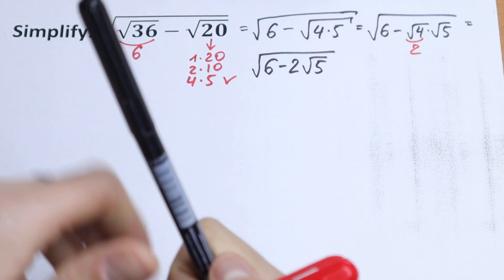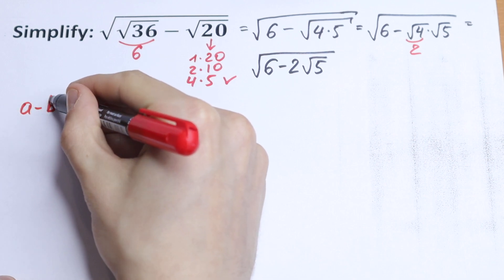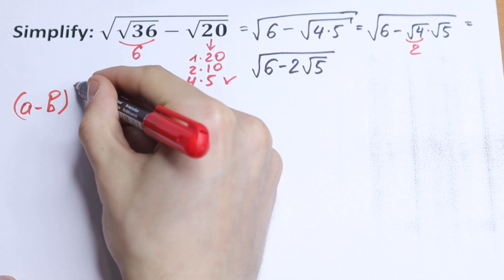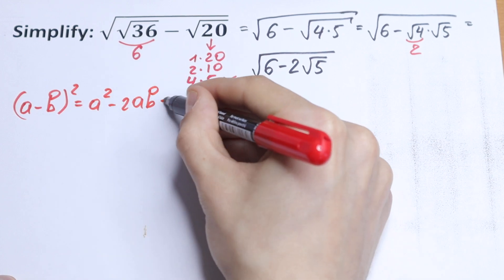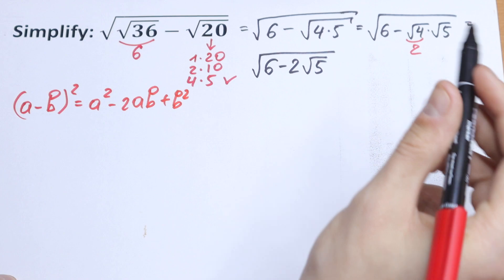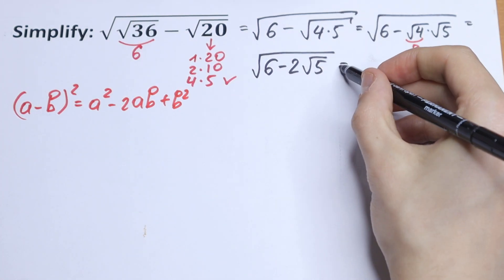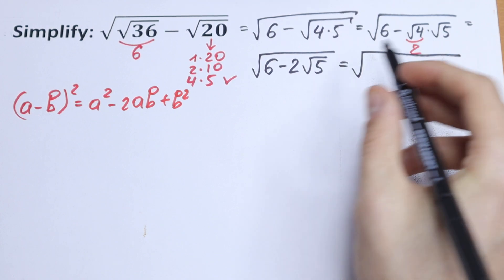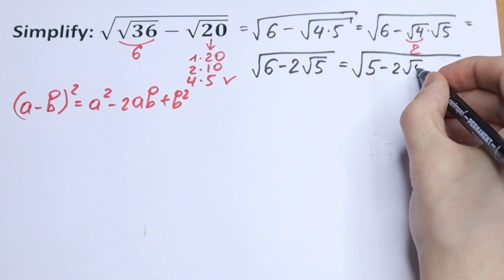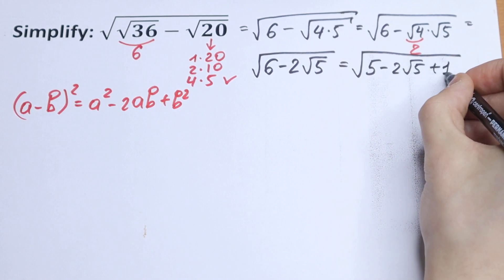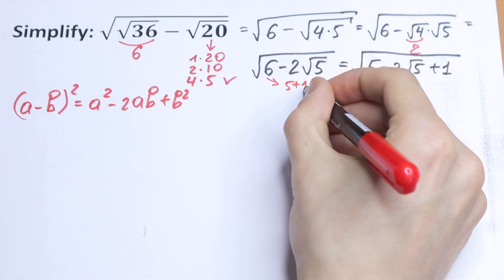I want to write a formula right here. The formula looks like this: (a − b)² = a² − 2ab + b². Now I want to write 6 as 5 plus 1, so we will have 5 minus 2 times the square root of 5, plus 1. Nothing changed — I just wrote 6 as 5 plus 1.